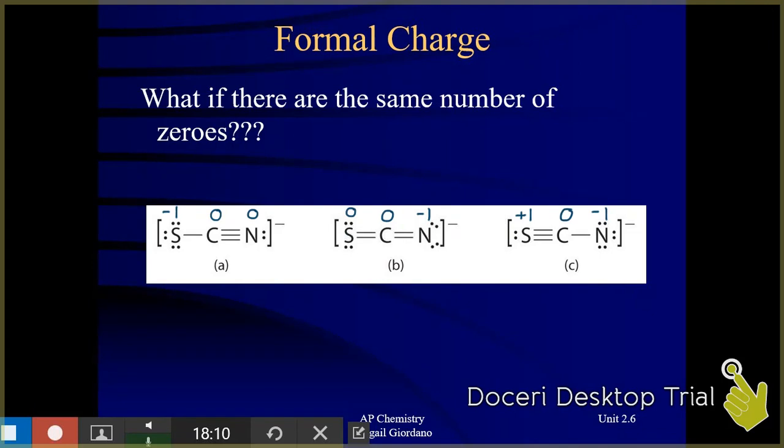So which structure, A, B, or C, is the better one? I can eliminate C right away because I can see that A and B have two formal charges of zero. Structure C only has one. So I'm going to eliminate that one. So now it's between A and B. Both of them have two zeros. Here's the deal.